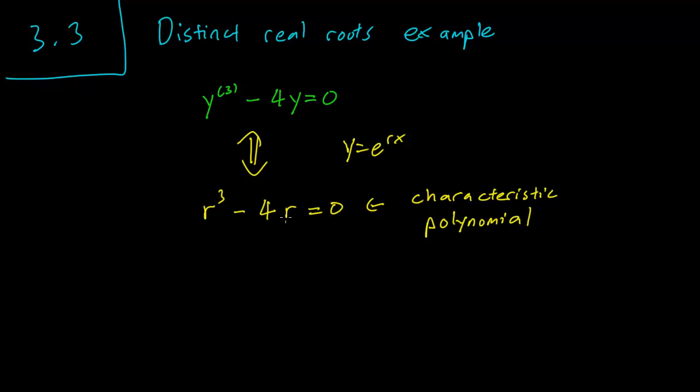So normally cubic equations, equations of degree 3, are really hard to solve, but in this case we have a really nice factorization available. We can factor out the r to get this. And this is a difference of two squares, so we can factor again.